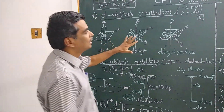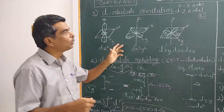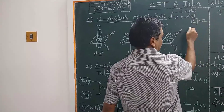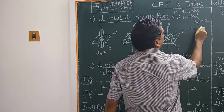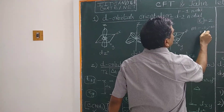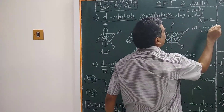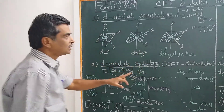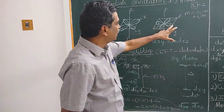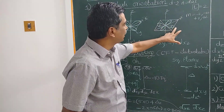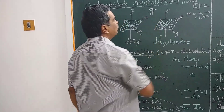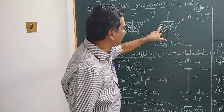There are five D-orbitals, as we know from L equal to 2, giving M equal to −2, −1, 0, +1, and +2. These five D-orbitals are symmetric, or gerade orbitals. In German, 'gerade' means center of inversion — they have a center of inversion.